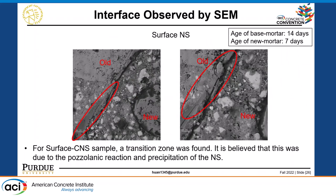More SEM images of the surface method show that this kind of transition zone can be found throughout the interface region. We believe this was related to the precipitation and the pozzolanic reaction of the nanosilica.